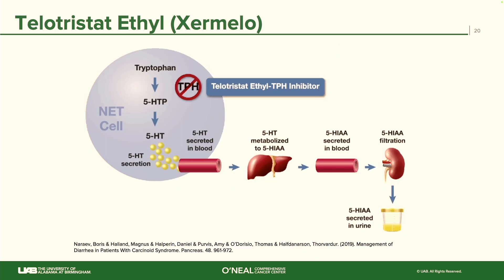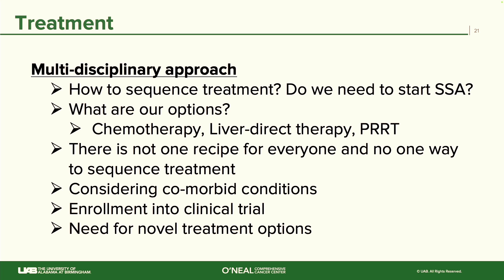I also want to briefly mention Xermelo — telotristat. This is a drug that can be used for patients who have carcinoid syndrome. It inhibits the production of serotonin in the body and can help control symptoms associated with carcinoid syndrome, including diarrhea and flushing. These are all very important questions we discuss in the multidisciplinary approach: how do we sequence treatment, and do we need to start a somatostatin analogue?